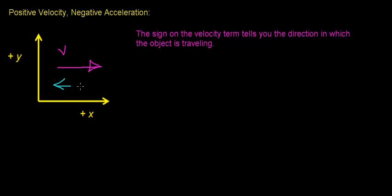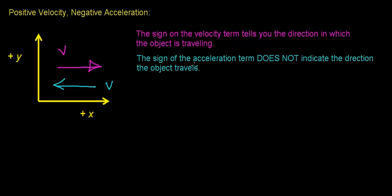Whereas if the object had negative velocity, or its velocity vector was pointing in the negative direction, that would indicate that the object's traveling in the negative direction. Just like velocity, the acceleration term can be either positive or negative, but the sign on the acceleration term does not indicate the direction in which the object travels.